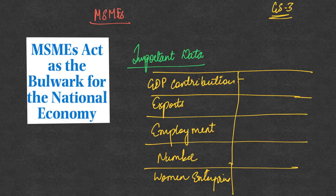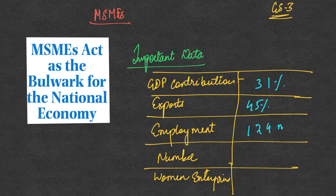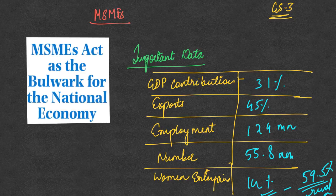Some important MSME statistics: MSMEs contribute 31% of India's GDP and account for 45% of exports. They provide employment to nearly 124 million people. There are about 55.8 million MSMEs in India, of which 14% are led by women entrepreneurs and 59.5% are located in rural areas. These statistics can be used to highlight the significance of MSMEs in answers on the Indian economy.